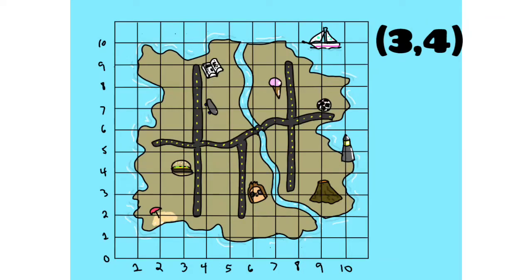Try this next one. Three, four is the ordered pair. Where do you end up on the map? All right, let's see. Start at the origin, go over three, the x coordinate, go up four, which is the y coordinate, and I've got the burger joint.